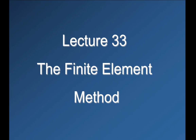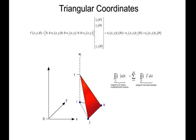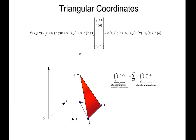This is Lecture 33, continuing to put together the finite element technique and assembling the matrices. Last lecture we talked about interpolating functions — these functions that weighted the temperatures of the nodes, expressing how important those temperatures were as a function of position. They were equal to one at the node, died off linearly to zero at the element edge, and were zero everywhere else. These are called triangular coordinates.